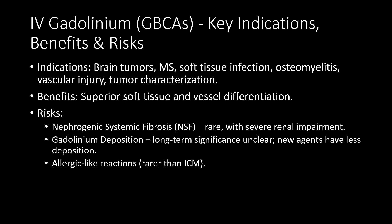Gadolinium contrast is used often for characterizing brain tumors on MRI, detecting and following multiple sclerosis, characterizing soft tissue infections or osteomyelitis, vascular imaging for injury or stenosis, and tumor characterization. It provides very good soft tissue and vessel differentiation, so for most MRI studies — besides routine spine and joint imaging — we almost always prefer to use gadolinium. Allergic-like reactions do occur but are much rarer than with iodinated contrast.